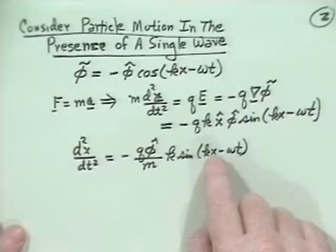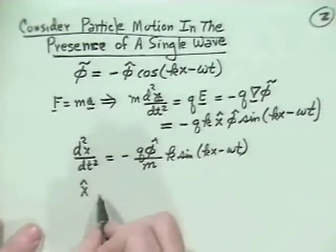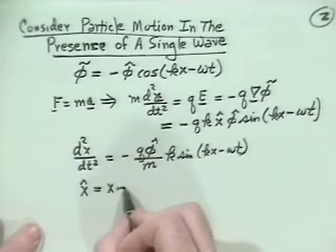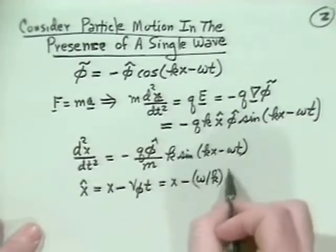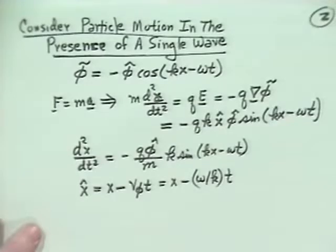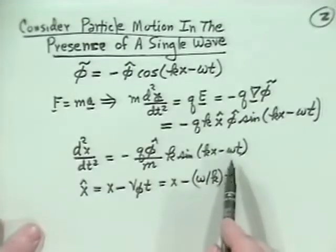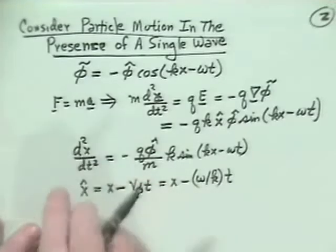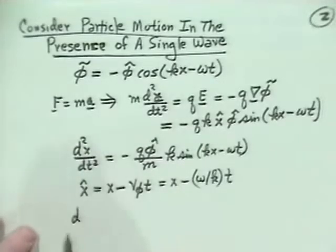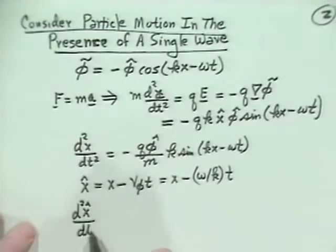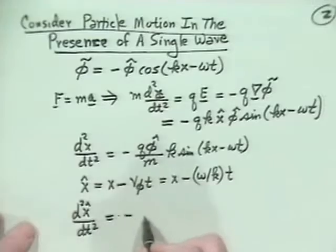The energy is: E = (m/2)(dx̂/dt)² − qφ̂·cos(kx̂), which we can write as (m/2)vx² minus qφ̂·cos(kx̂), all in the moving frame. In this frame we can have trapped particles — bouncing back and forth in the potential well — or passing particles that go over the top.